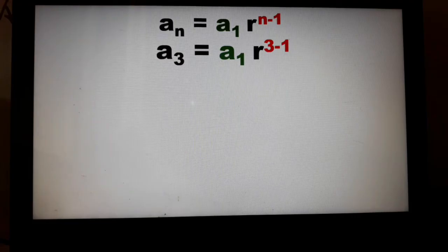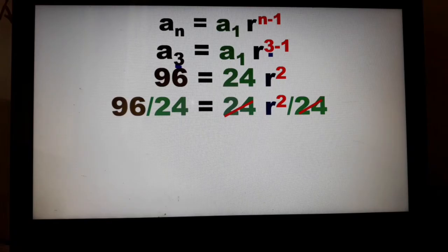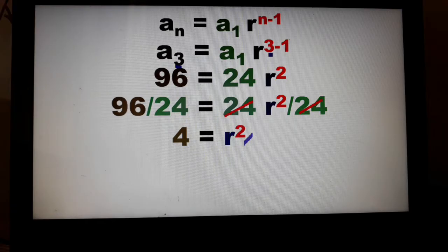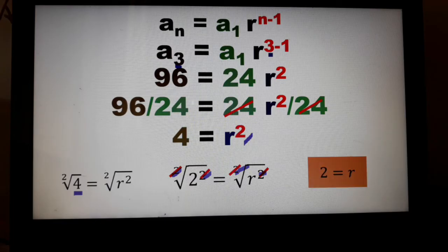So A sub 3 = A sub 1 times R raised to 3 minus 1, where the 3 came from the subscript of our term position. Substituting: 96 = 24 times R squared. Divide both sides by 24 to get 4 = R squared. To remove the exponent 2, get the square root of both sides. The square root of 4 equals the square root of R squared. Since 4 = 2 squared, we can cancel the index and exponent, leaving R = 2.